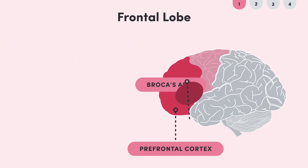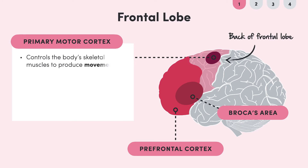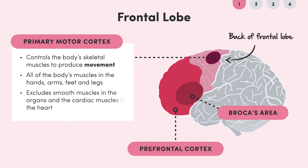The last part of the frontal lobe is the primary motor cortex, which is located at the back of the frontal lobe. This part of the brain is in charge of controlling the body's skeletal muscles in order to produce movement. Skeletal muscles include all of the body's muscles in the hands, arms, feet and legs — excluding smooth muscles in the organs and cardiac muscles in the heart.